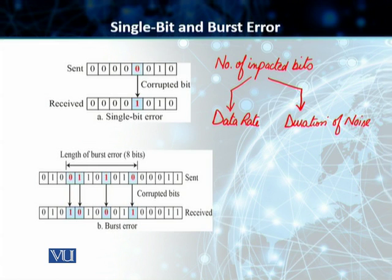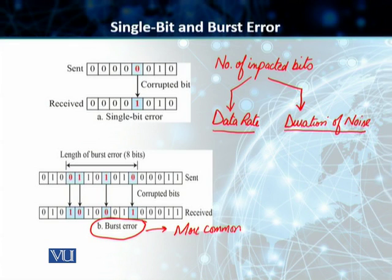The higher the data rate, the more bits are going to be impacted. The more the duration of the noise source, the higher number of bits is going to be impacted. If both factors are high, we will have a higher number of bits that are impacted. Because of that particular reason, burst errors are more common than single bit errors.